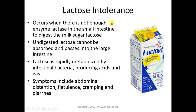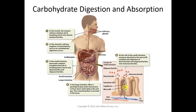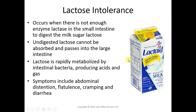One disaccharide that causes digestive troubles for most people in the world as they become adults is lactose. Lactose is a glucose and a galactose bound together. Lactase, the enzyme that breaks down lactose, should break that disaccharide into monosaccharides for absorption. But many individuals don't have enough lactase, so the disaccharide moves into the large intestine where bacterial digestion produces gas, cramping, and diarrhea. That's called lactose intolerance.